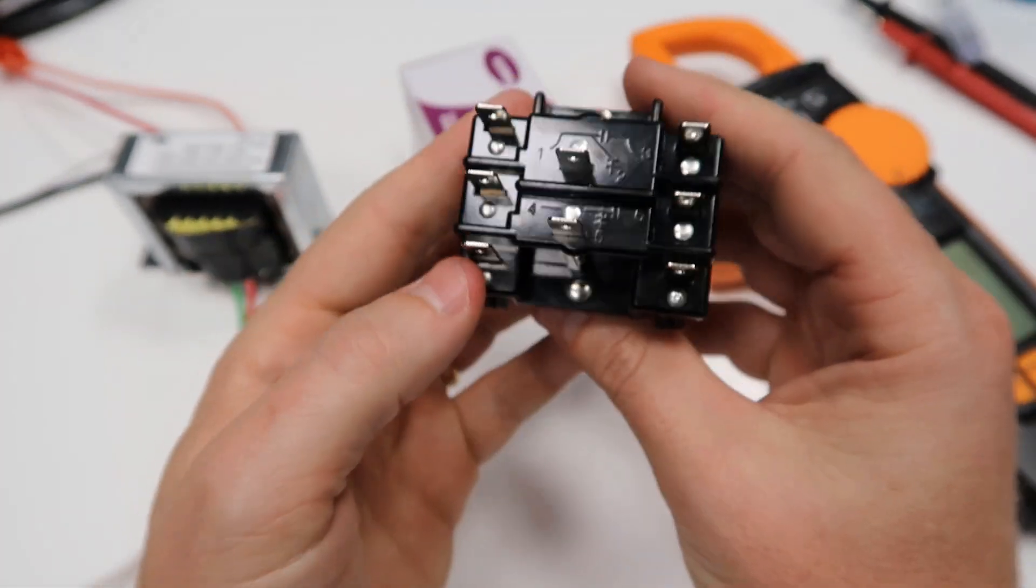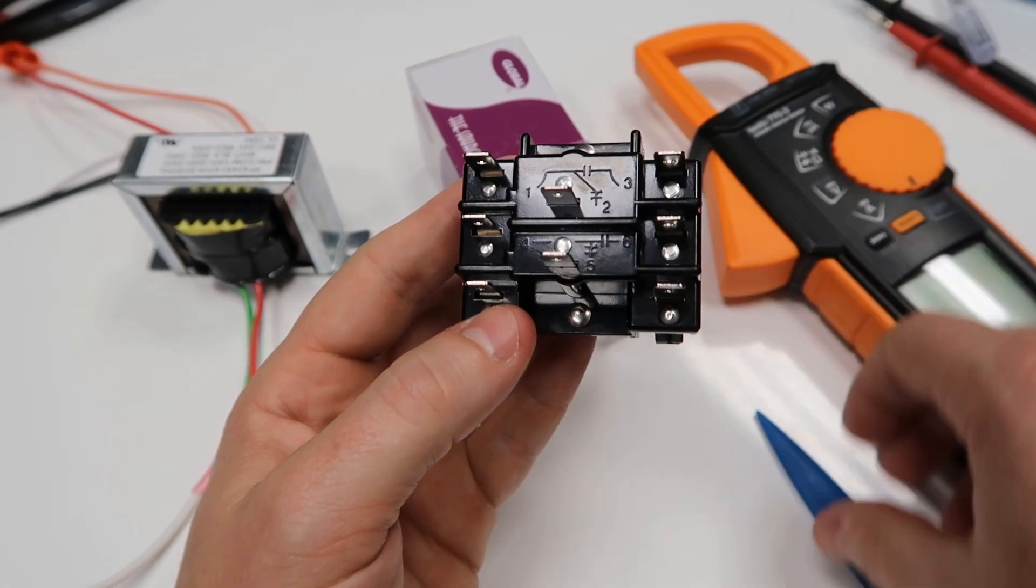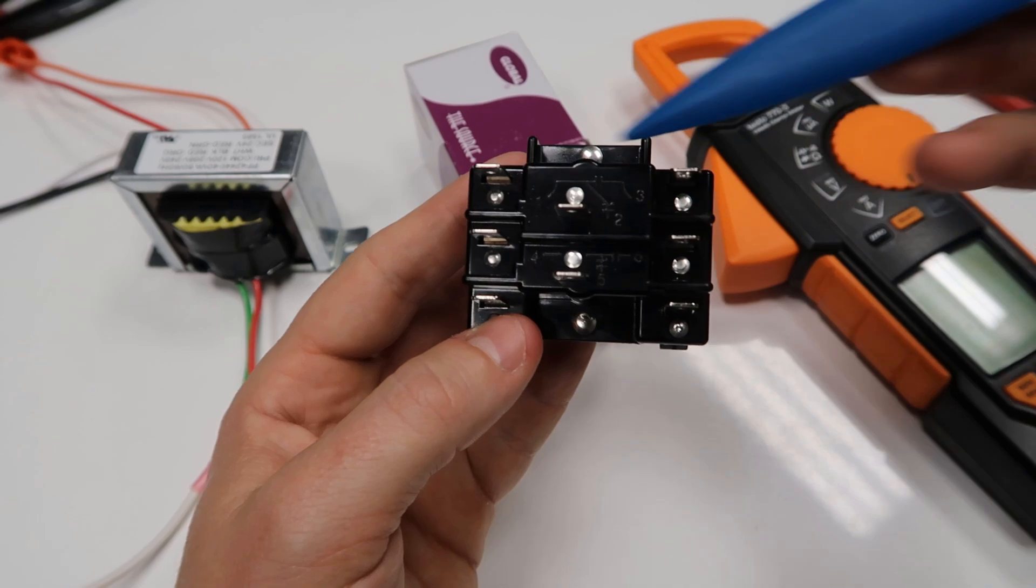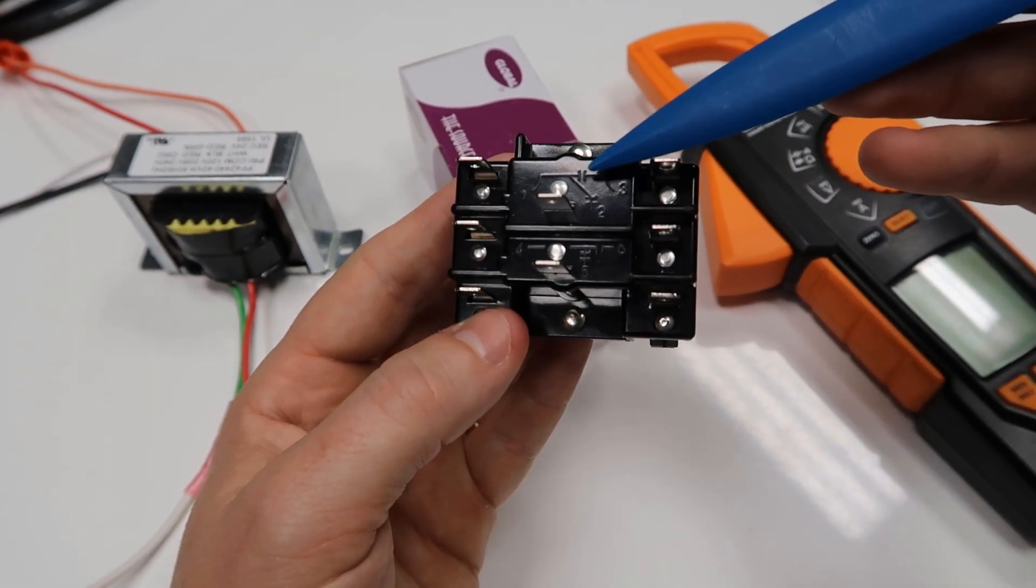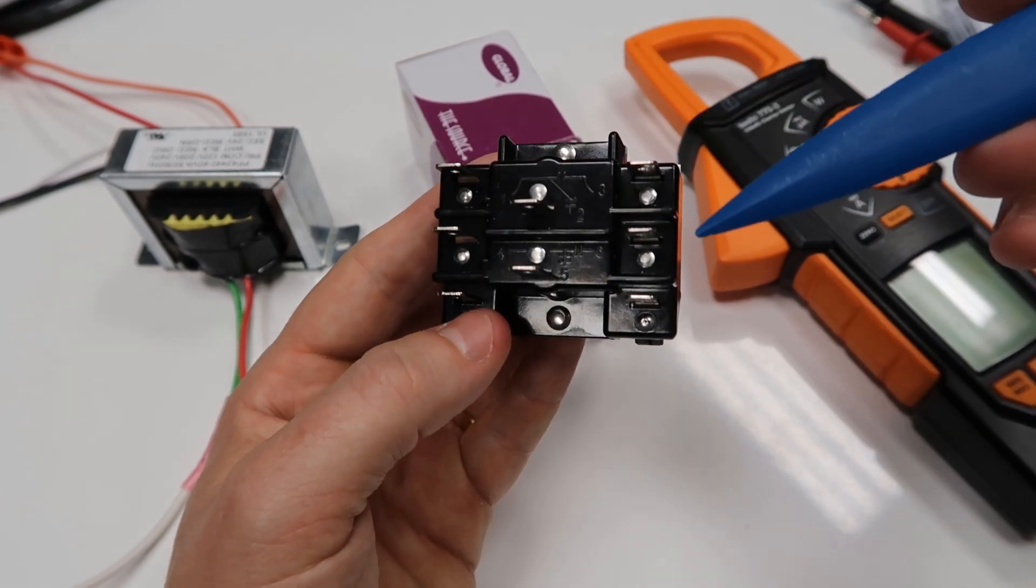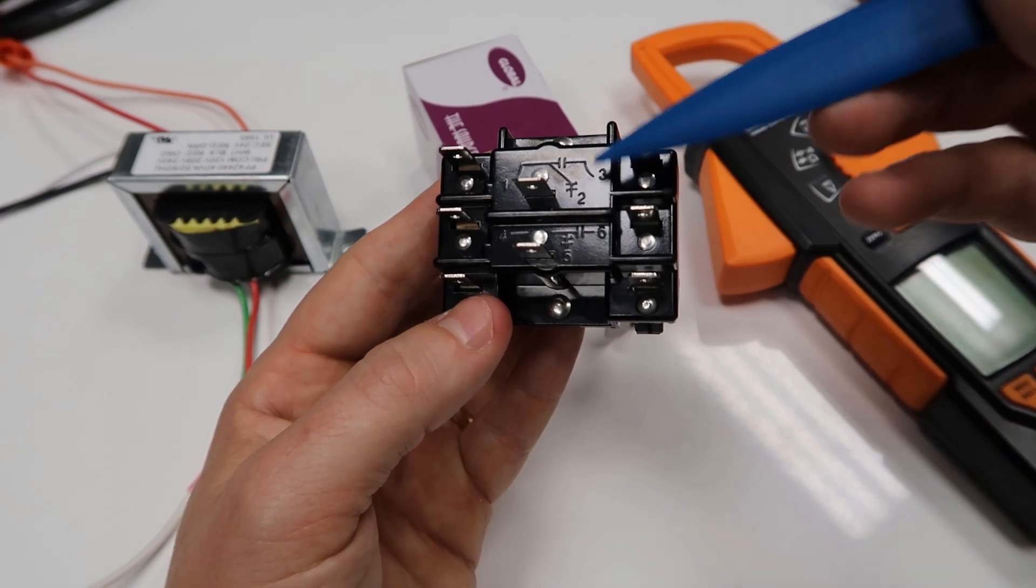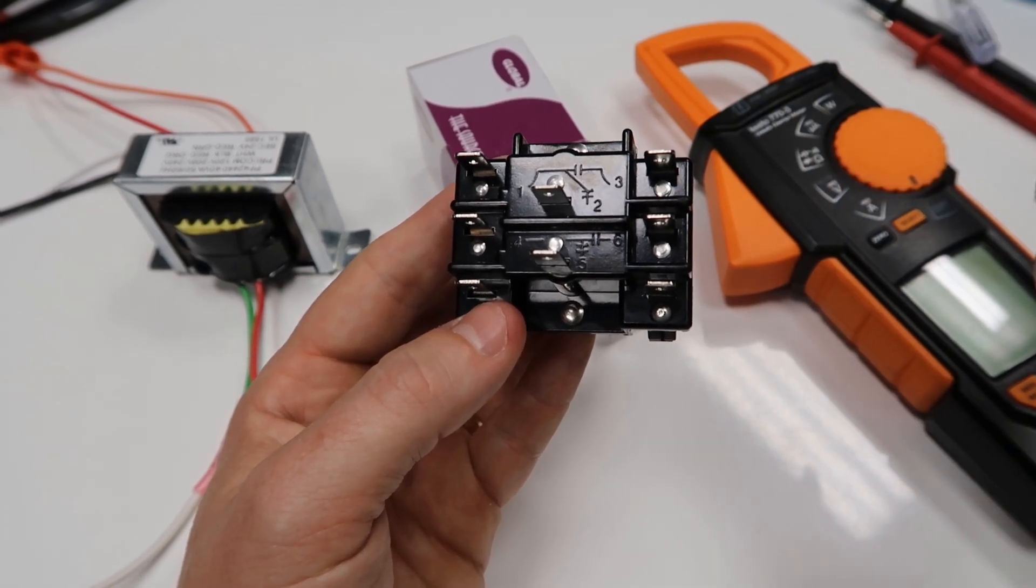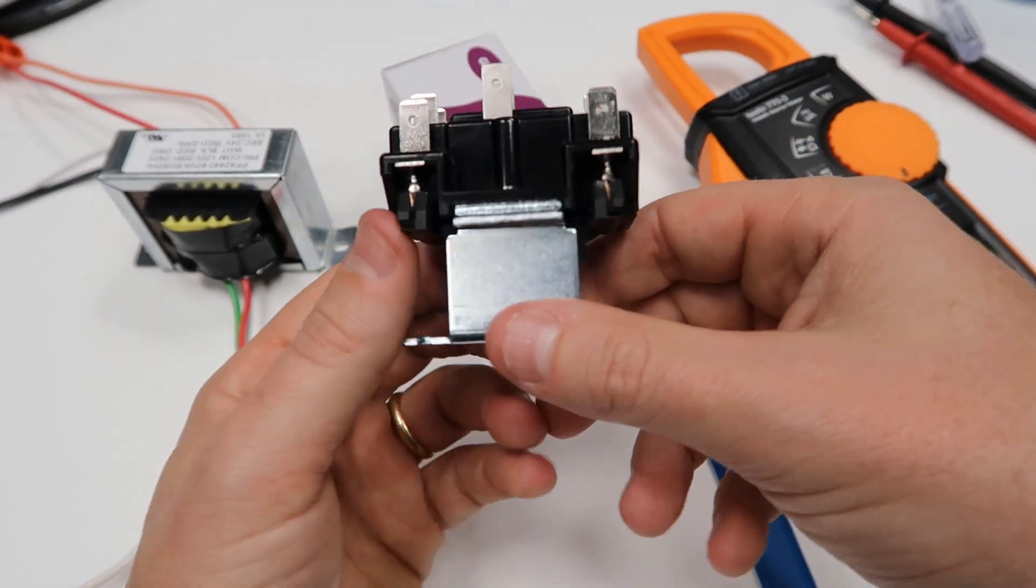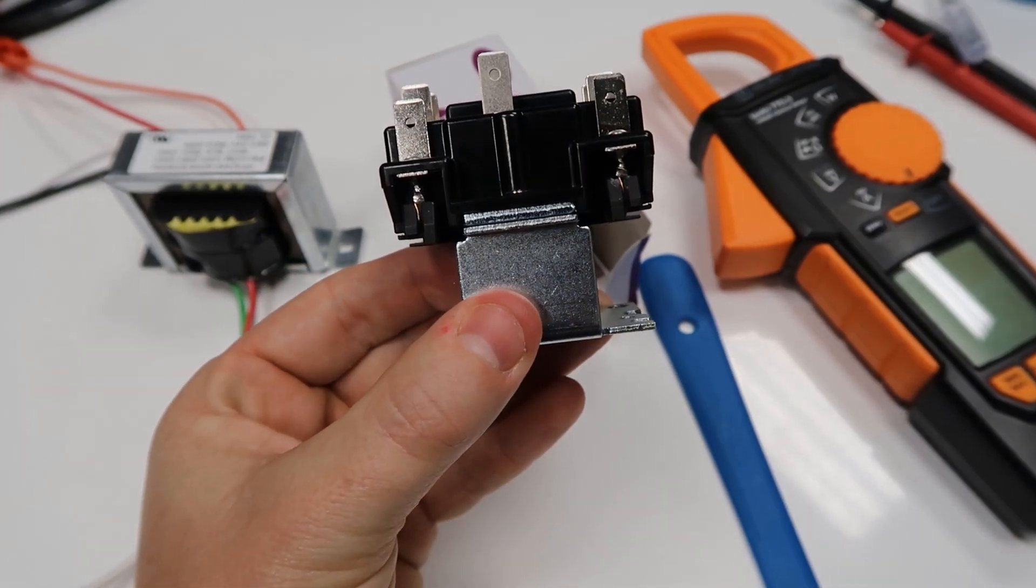For the relay, sometimes people will call them contacts, some people will call them the switch, some people will call them points. So between one and three is a normally open set of contacts, set of points, or a normally open switch. Any of those terms are used in the trade. But technically speaking, they call them contacts within a relay. What switches this relay, it's a remote switch, is whether or not we have 24 volts applied to the actual coil of the relay itself.